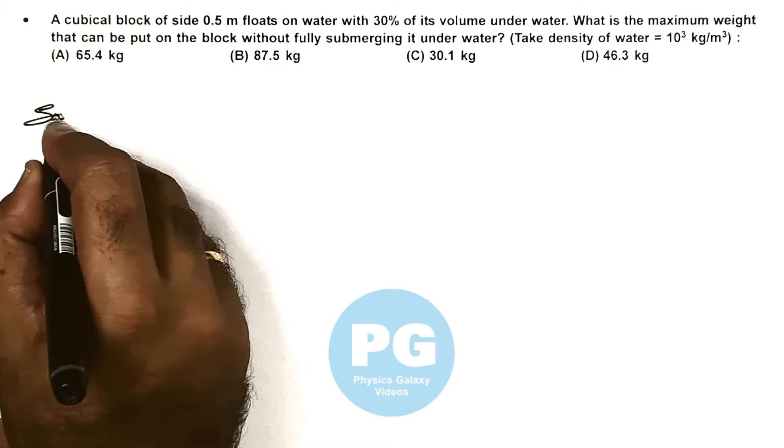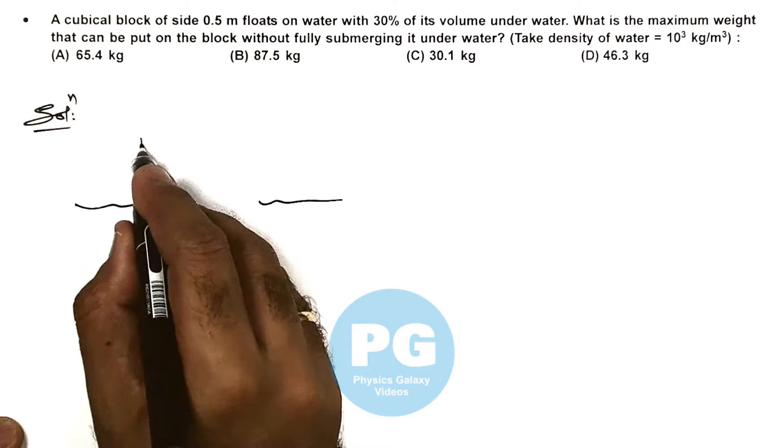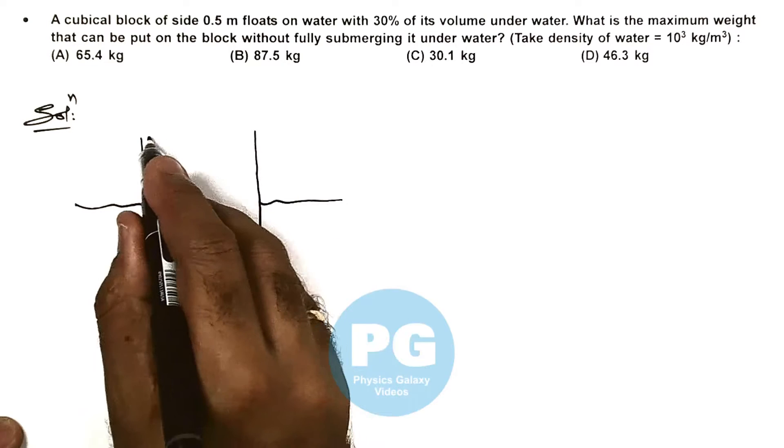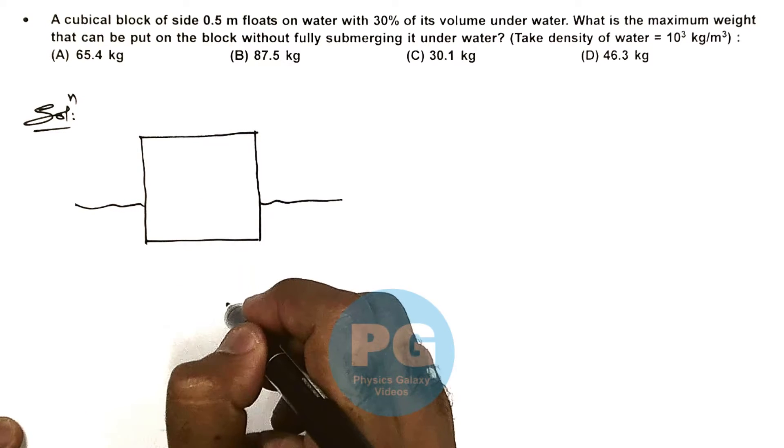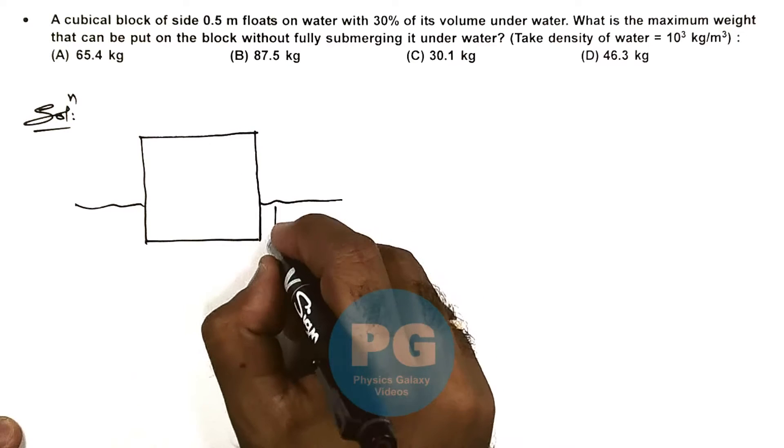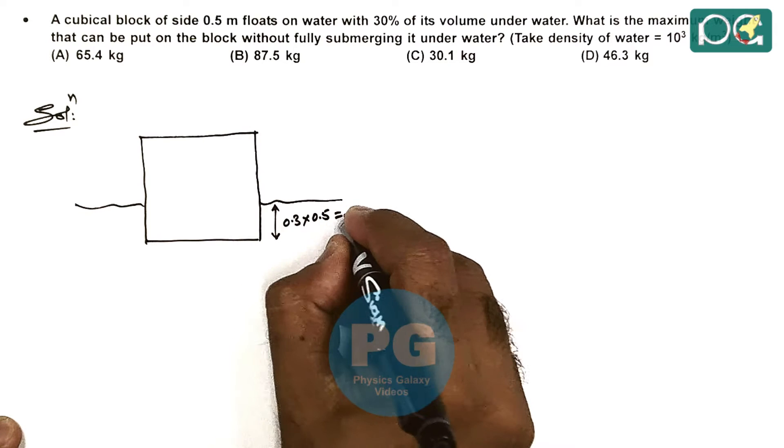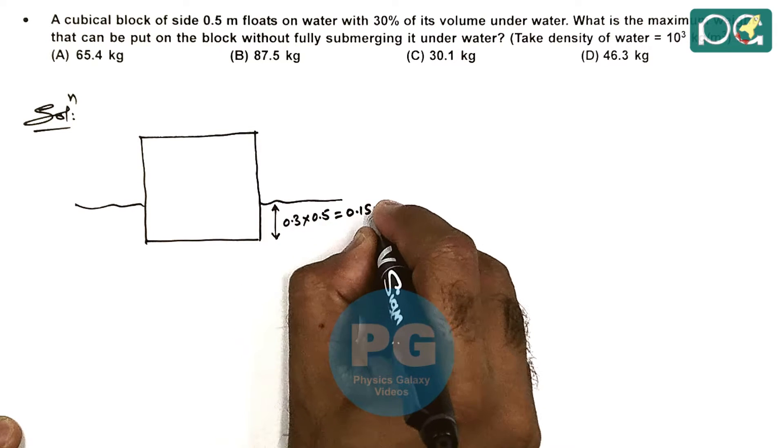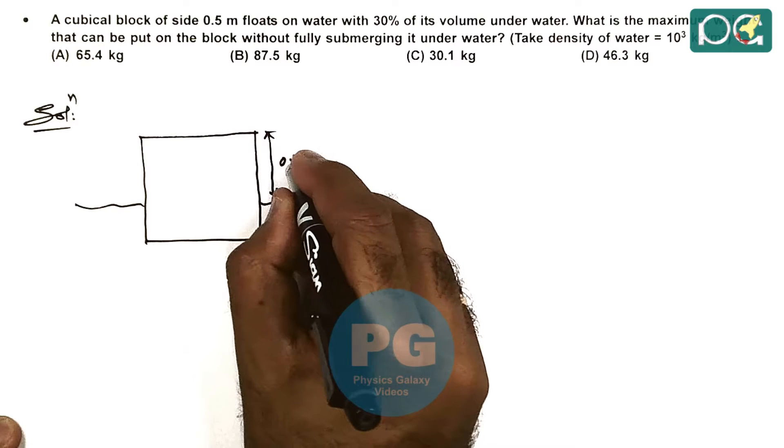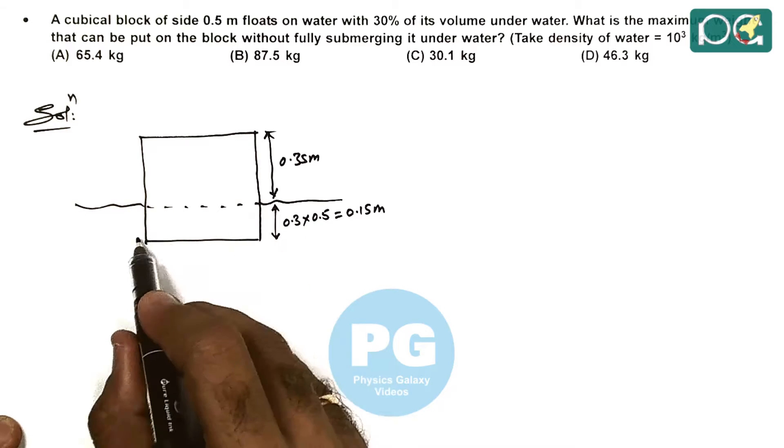So here the situation is like this: there is a block of which 70% part is outside the water and 30% is submerged. If its side is 0.5 meter, then the submerged part is 0.3 times 0.5, so 0.15 meter is submerged. The outside length is 0.35 meter.